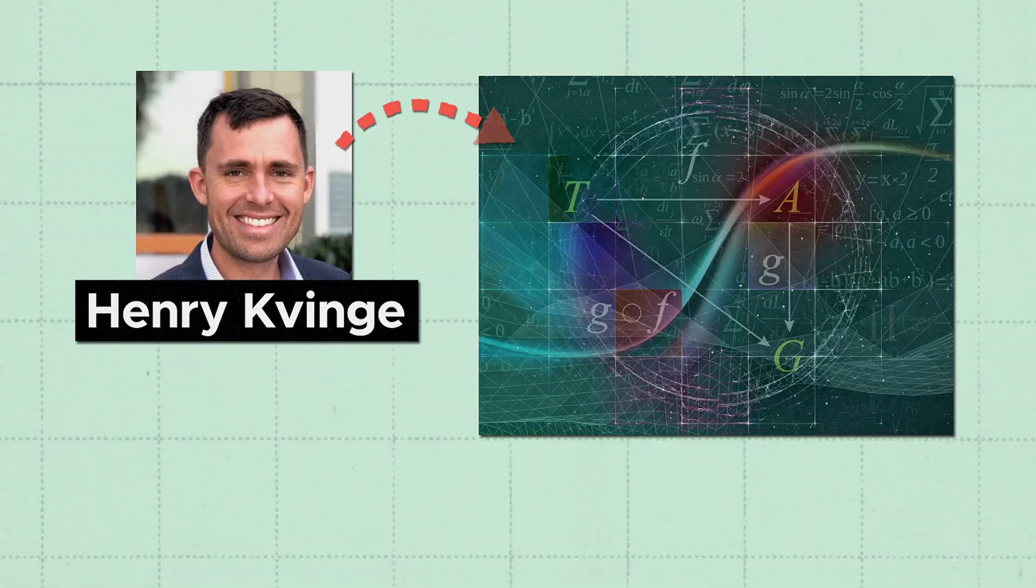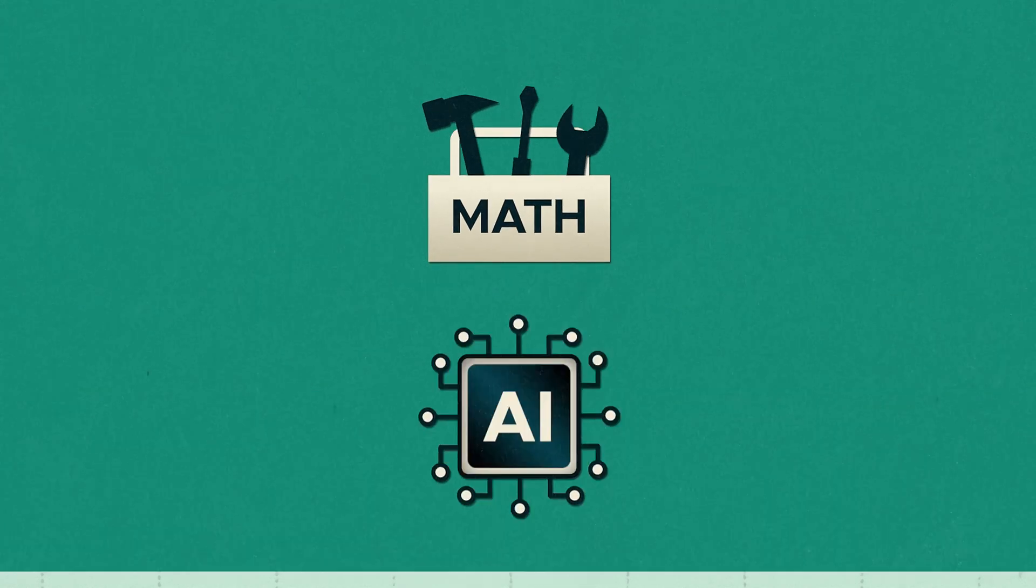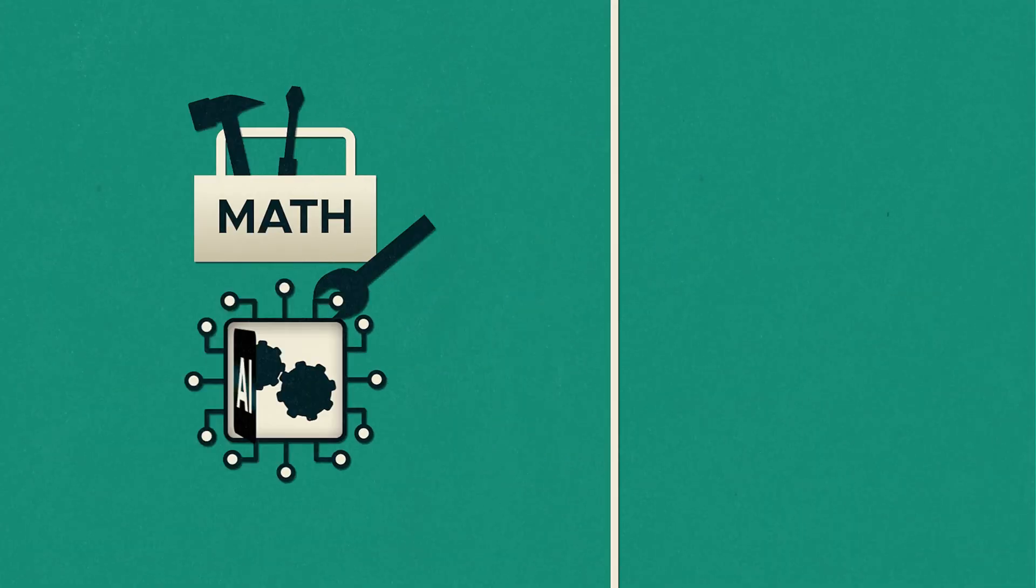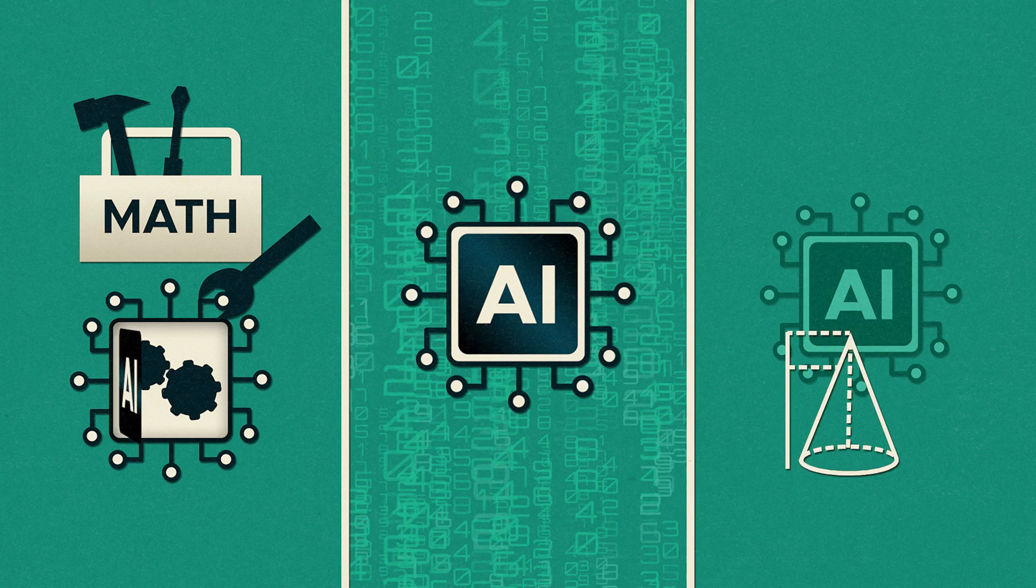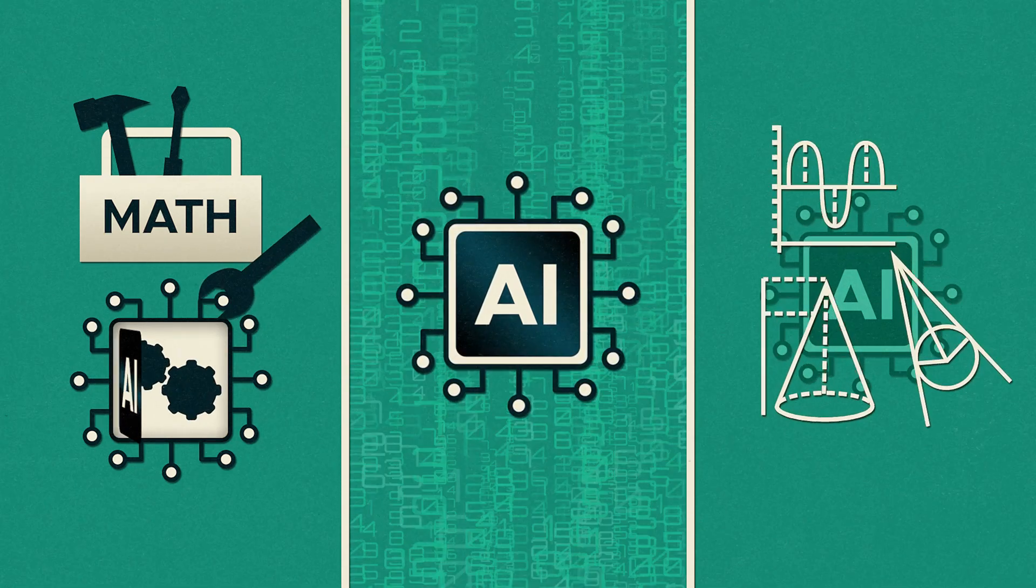Hi, I'm Henry Kavingi, a mathematician at Pacific Northwest National Laboratory. Math can be a powerful toolkit for understanding AI. Math can inspire AI development, and AI can be applied to specific mathematical problems, problems that were previously thought to be unsolvable.